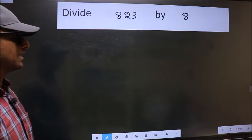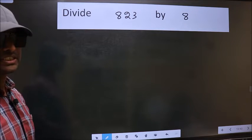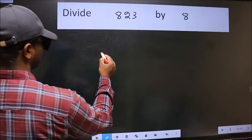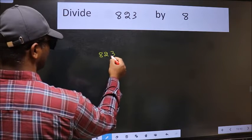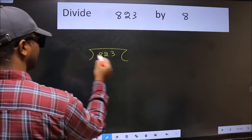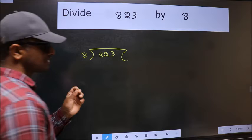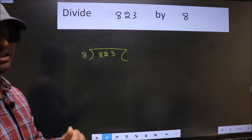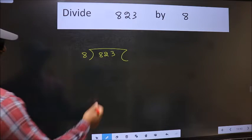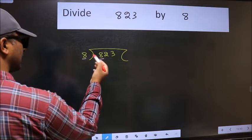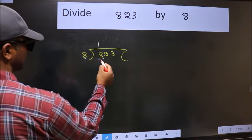Divide 823 by 8. To do this division, we should frame it in this way: 8 goes into 823. This is your step 1. Next, here we have 8 and here 8. When do we get 8 in the 8 table? 8 times 1 is 8.